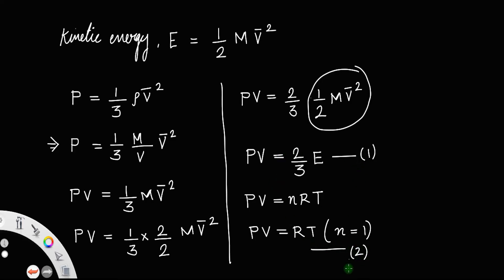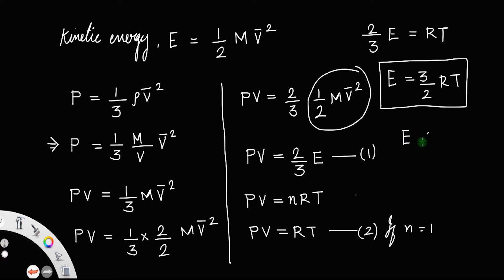If you compare 1 and 2, that is p v equal to r t, this is for one mole of gas if n equal to 1. So, if you compare 1 and 2, you can equate the right sides, that is 2 by 3 E is equal to r t and E is equal to 3 by 2 r t, which means the kinetic energy per mol of a gas is directly proportional to absolute temperature.